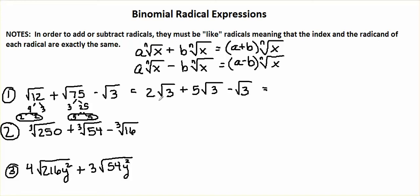All of our radicals have the same index and the same number underneath, so we can now add the numbers in front. We have 2 plus 5 is 7, minus 1 is 6. So we end up with 6 radical 3.